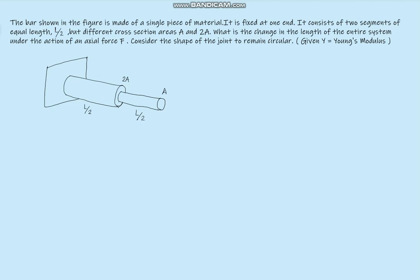The bar shown in the figure is made of a single piece of material. It is fixed at one end. It consists of two segments of equal length L/2 but different cross-sectional areas A and 2A.